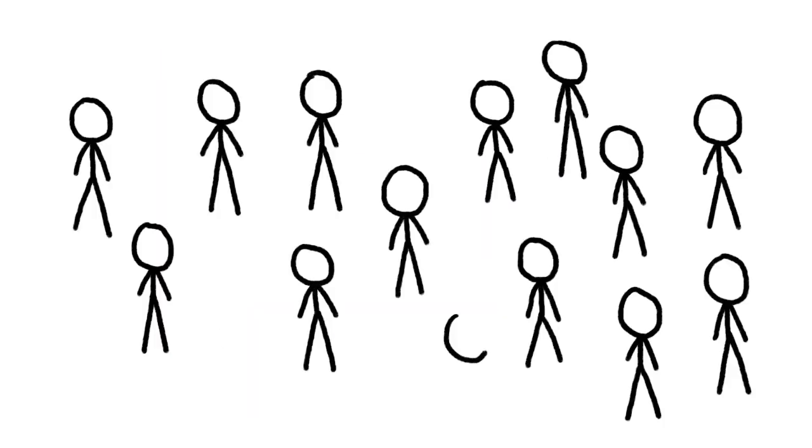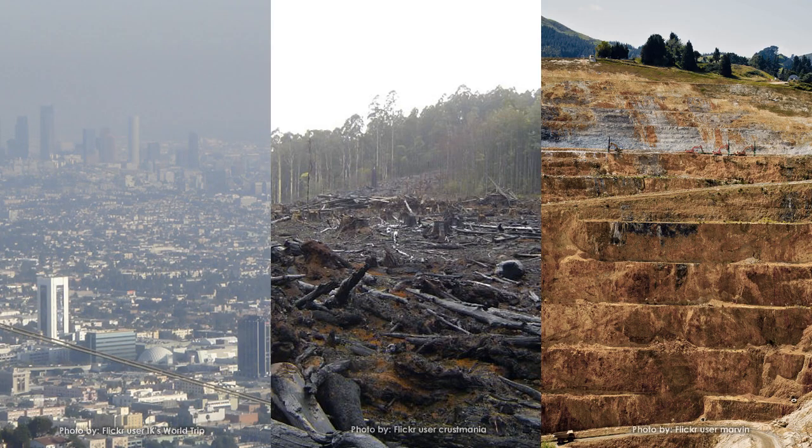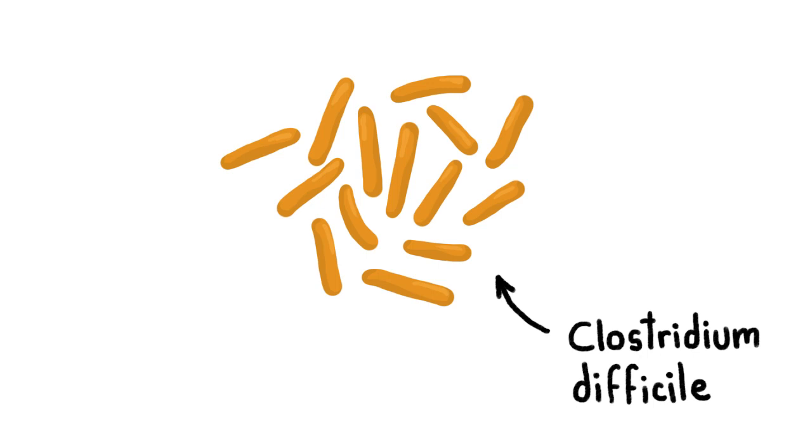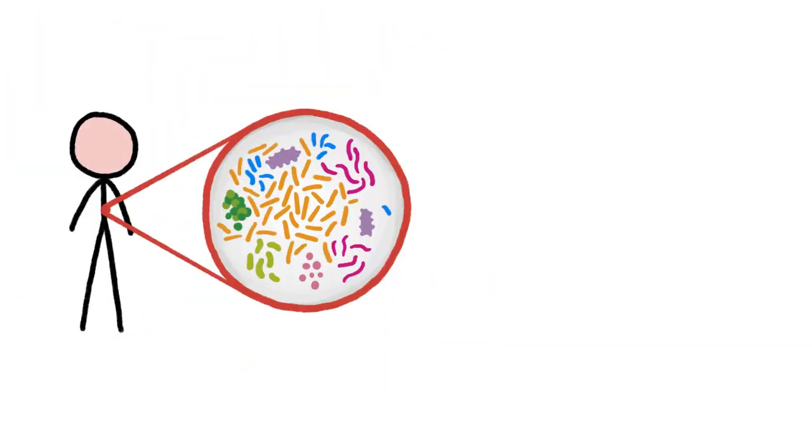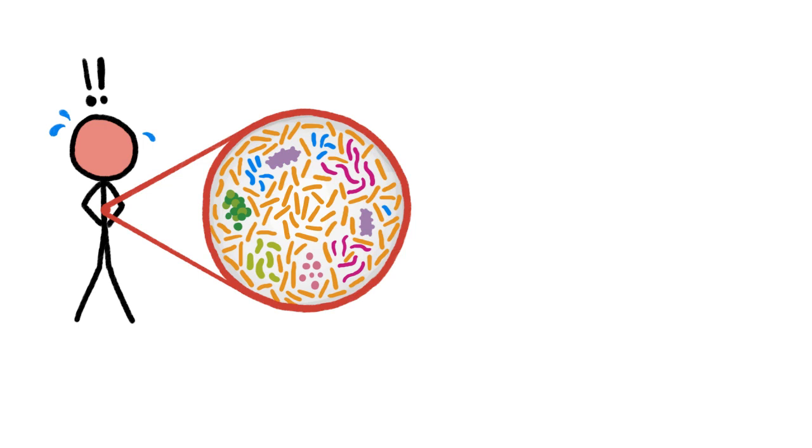In contrast, when a single species is dominant, it can cause problems. Take the case of Clostridium difficile, a natural part of your gut community that causes severe inflammation of the colon when it becomes too abundant.